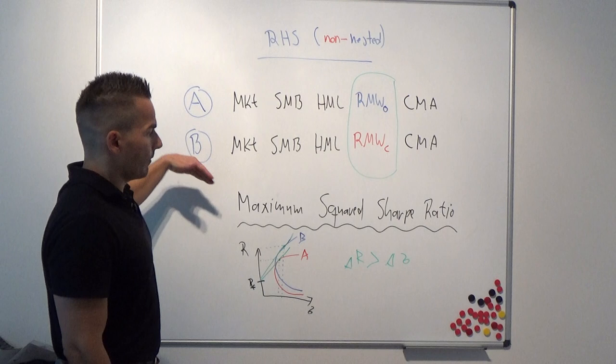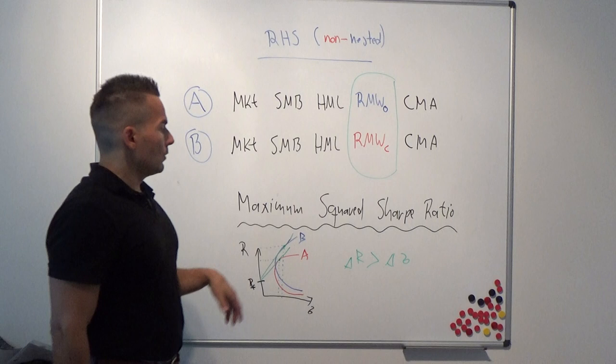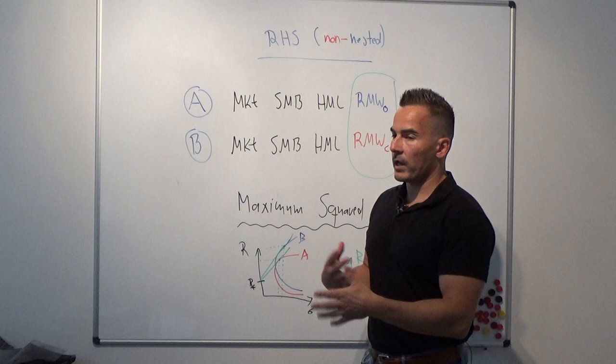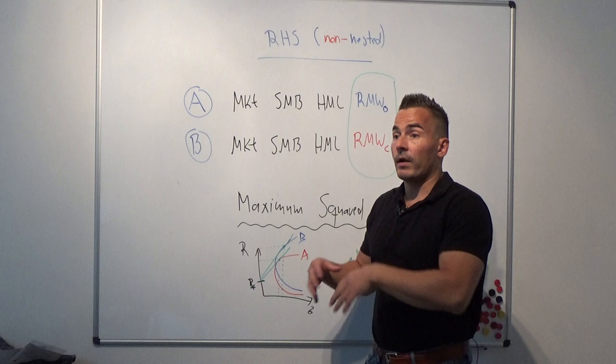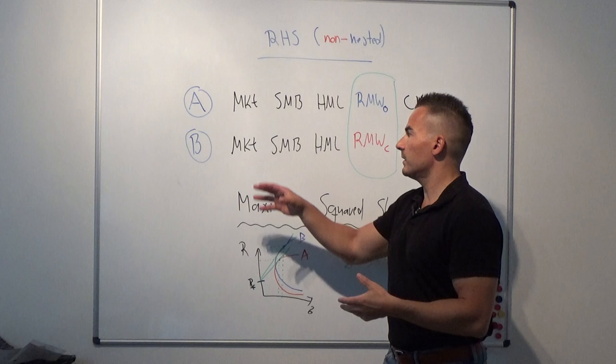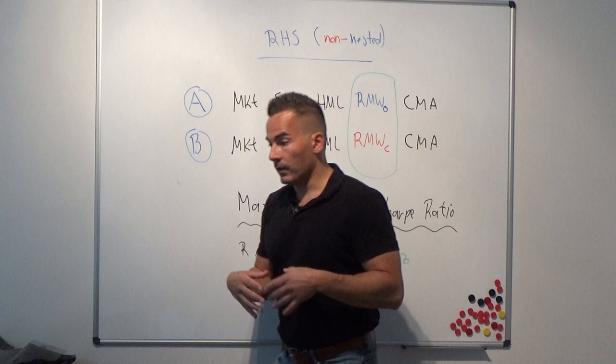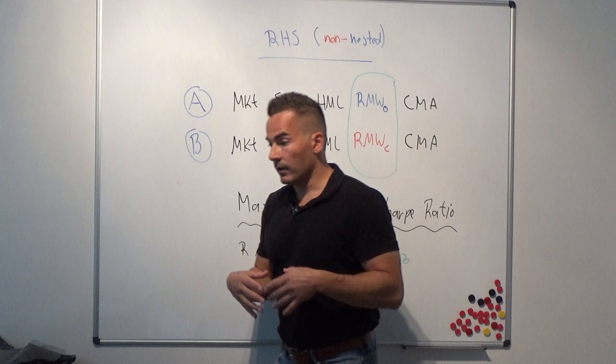You can compare more than two models — models A, B, C, D, E, F, G — checking which has the highest maximum squared Sharpe ratio, then running simulation studies to see at what frequency each model beats the others. You then choose the model that beats most of the others most often.